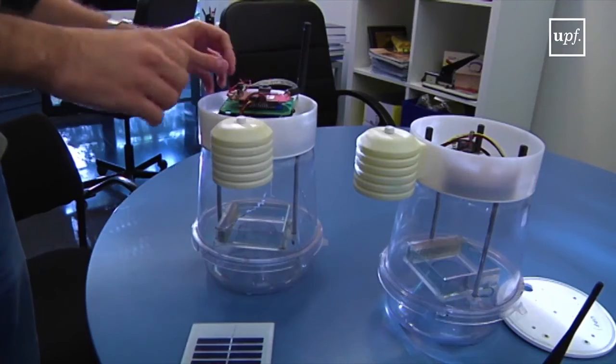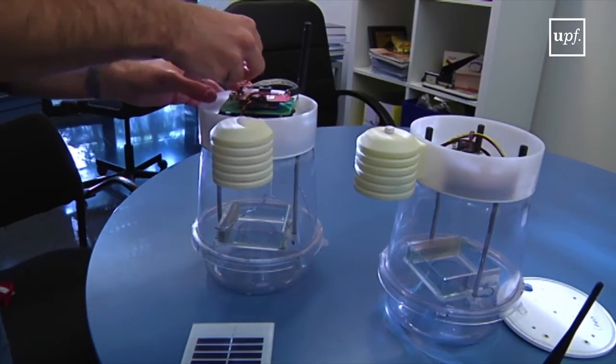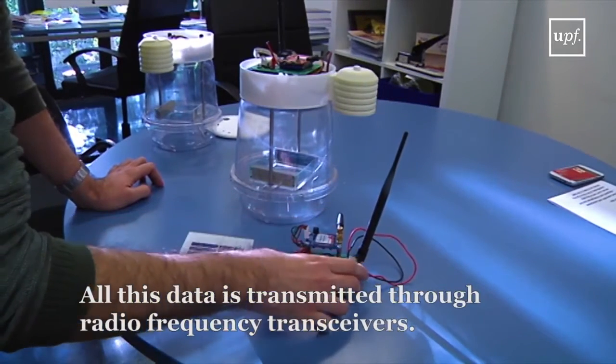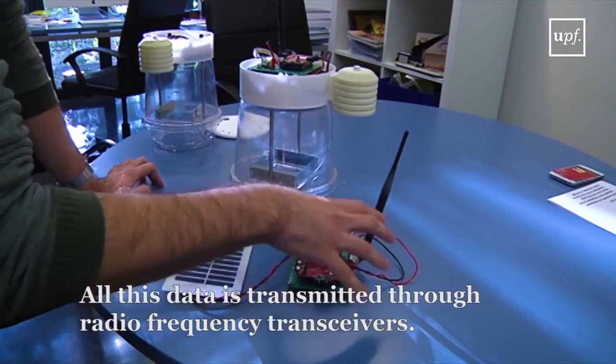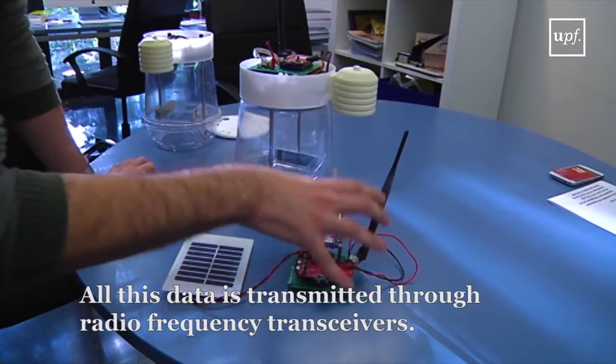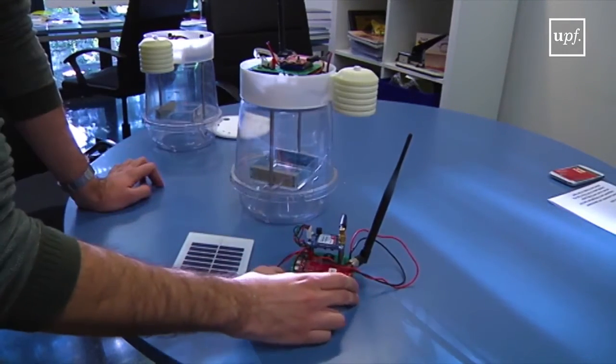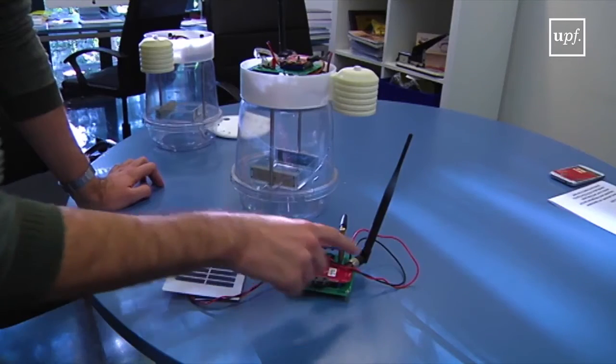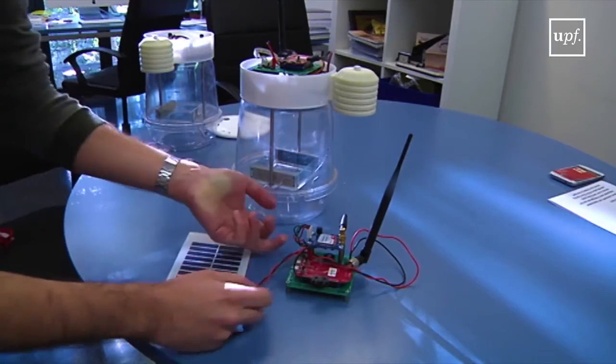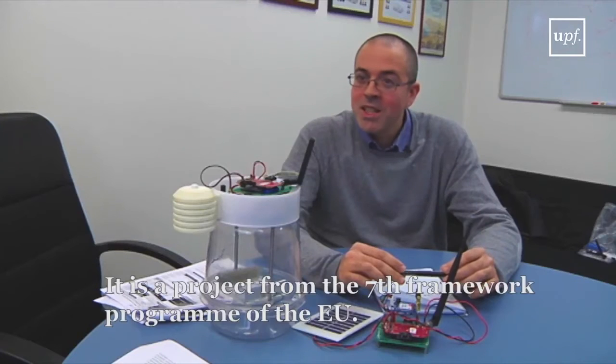all this data is transmitted thanks to radio frequency transceivers to connect all this data and transmit it to a cloud server that collects all the information from these traps. Enthomatic is a project from the 7th Framework Program from the European Union.